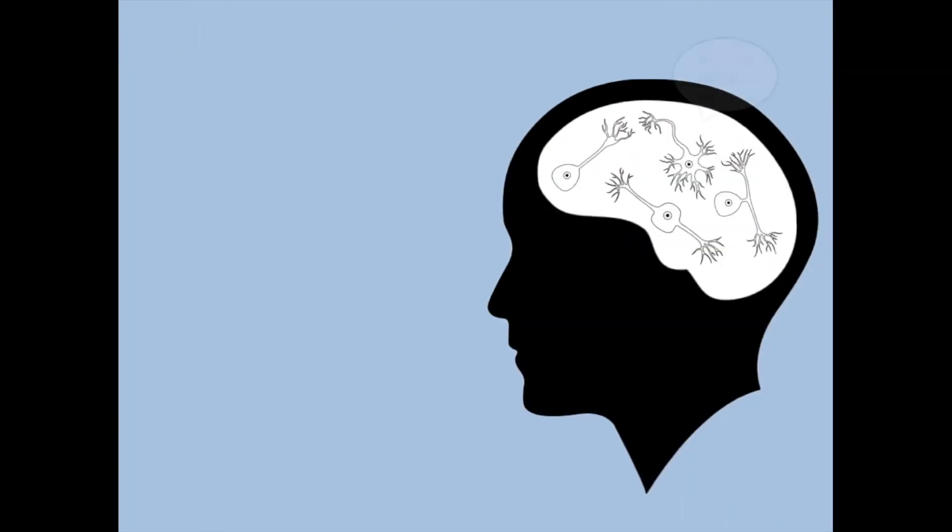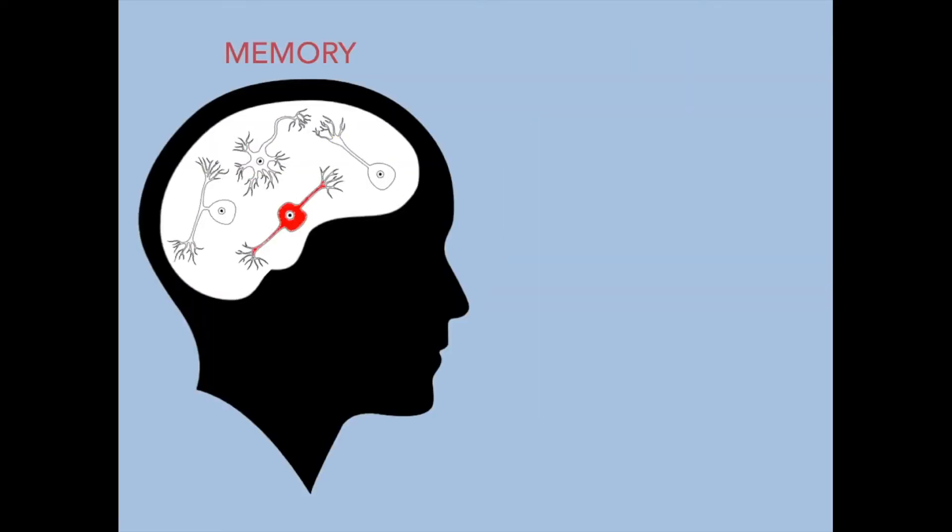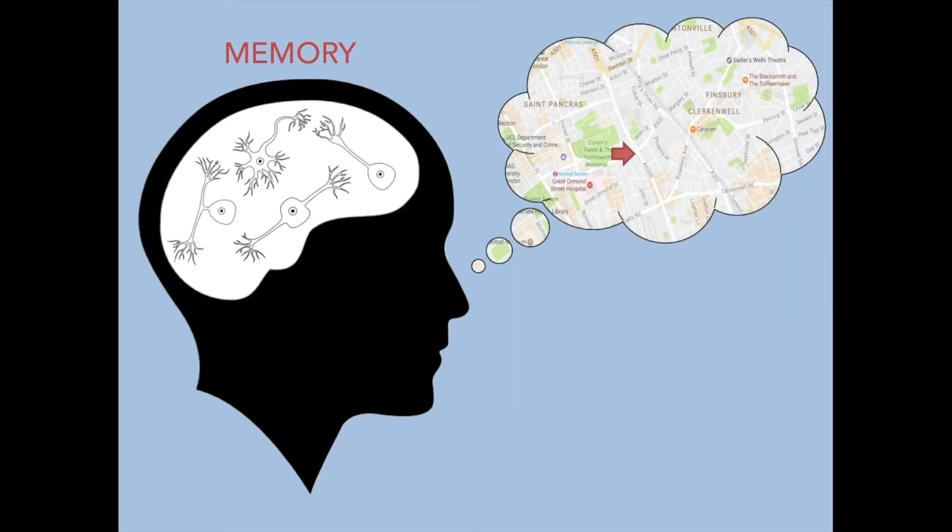All of these cells also communicate with each other. Although we still don't fully understand how memory works, it is believed that the patterns of activity and communication between these cells is stored while learning or exploring. And then these same patterns are repeated at later times to give the brain an idea of where in space you are and where you need to go.